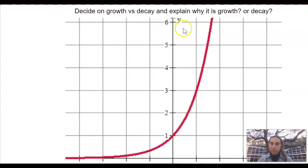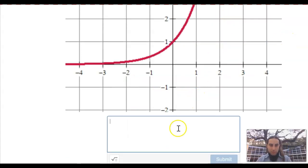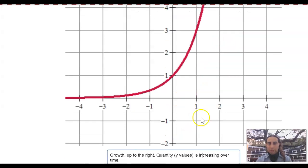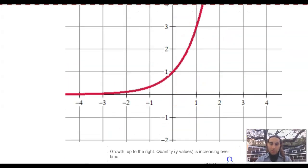Now is this growth or decay? Well, look at it. It's going up and to the right. The y values are increasing over time. And so I'm going to put my last answer, but I'm going to just put it opposite. This is growth because it's up to the right. And the quantity, the y values are increasing over time. Or over x.